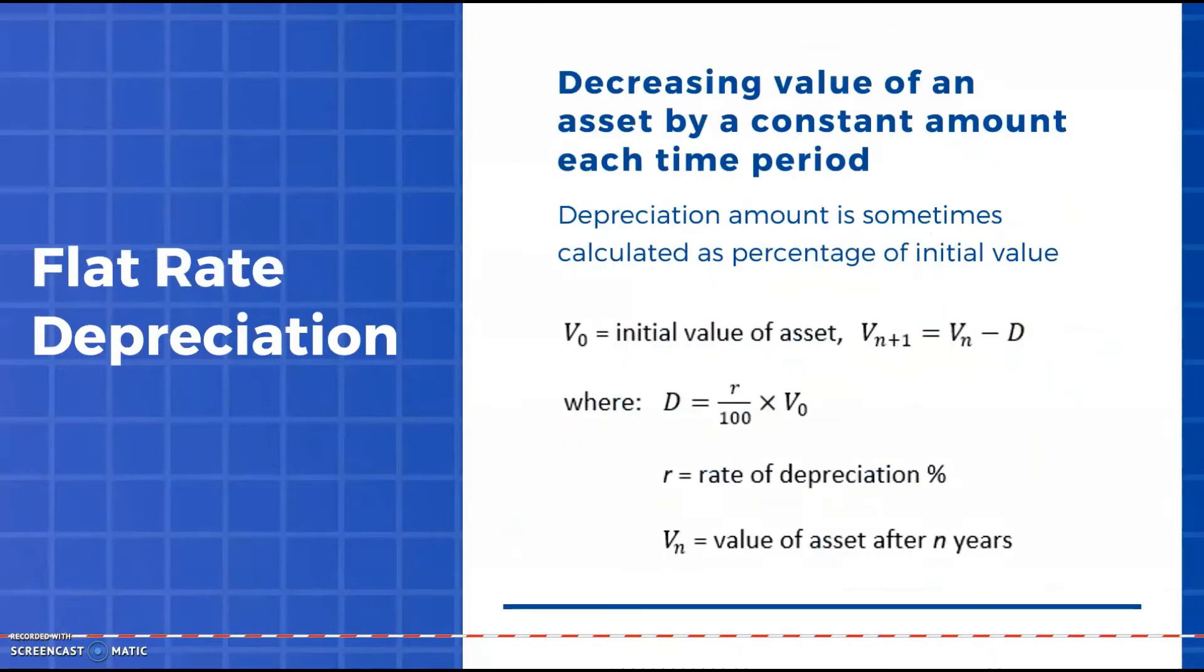Next up we're looking at flat rate depreciation. This is another example of a linear recurrence relation where we're looking at depreciating by a constant amount each time period. Quite often we are given information that we're depreciating at a rate per year. So the first step is often we have to find this calculation of our depreciation amount D.